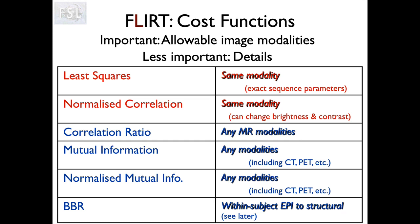The two at the top shown in red are ones you can only use when you have the same modality - that is, a T1-weighted image and another T1-weighted image, not a T1-weighted and T2-weighted image. For least squares it has to be exactly the same so all parameters and intensity are pretty much identical. For normalized correlation there can be an overall change in brightness and contrast, allowing some flexibility with changes in TE or TR within a T1-weighted sequence. Both work well with the same modality, but if you have different modalities they will not work and should not be used.